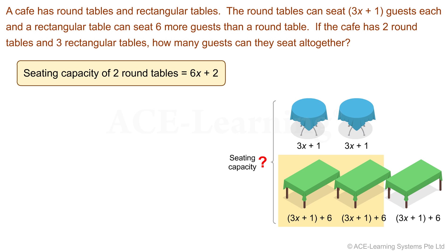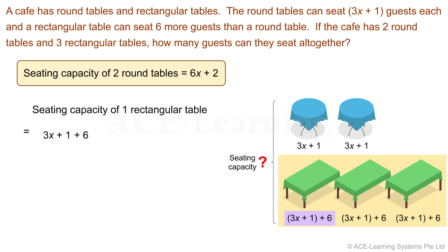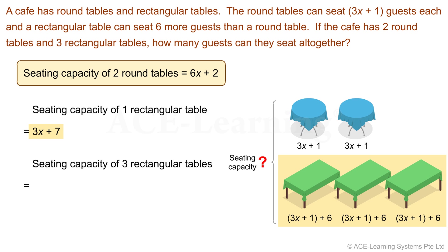Next, we need to find the seating capacity of three rectangular tables. A rectangular table can seat 6 more guests than a round table. So we write: the seating capacity of one rectangular table is equal to 3x plus 1 plus 6. Let's simplify this expression — and we have 3x plus 7. Now the seating capacity for three rectangular tables is 3 times 3x plus 7.